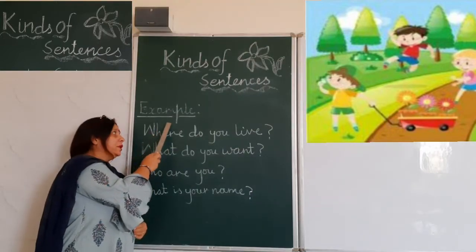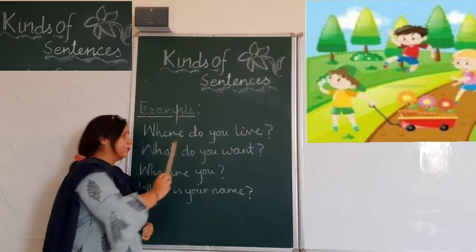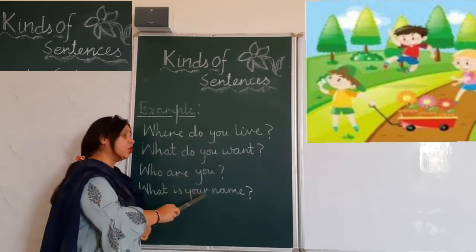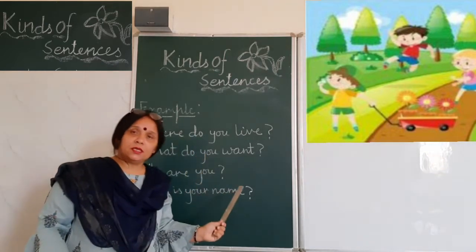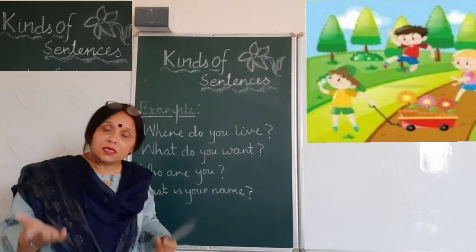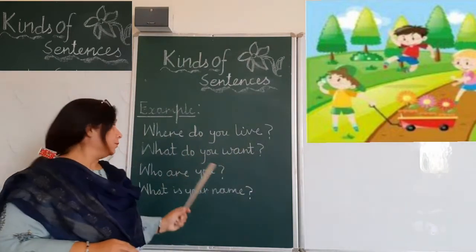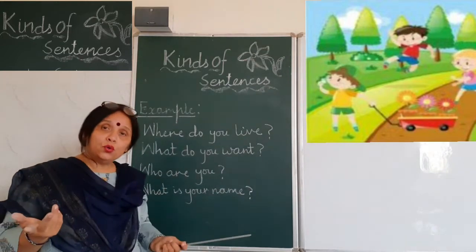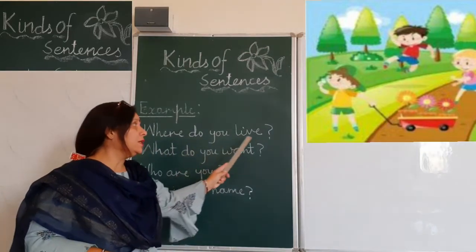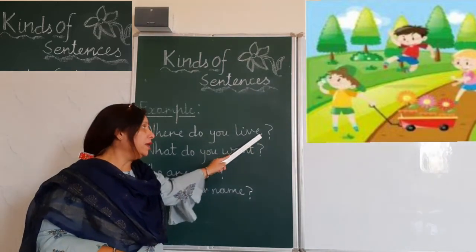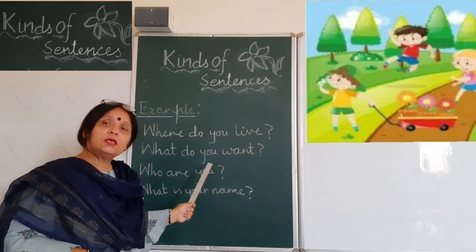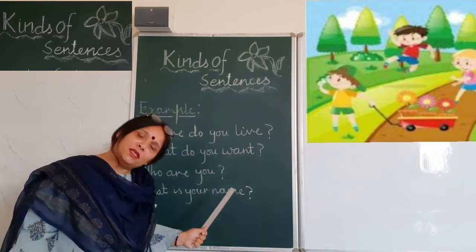For example: Where do you live? What do you want? Who are you? What is your name? You can see that all these sentences are asking something. All these interrogative sentences end with an interrogation mark. These are the questions which are known as interrogative sentences.